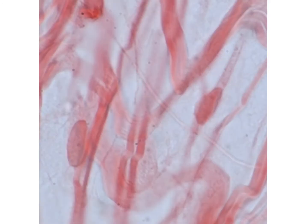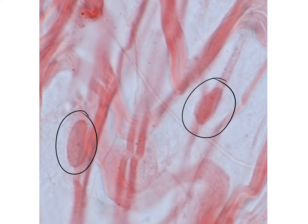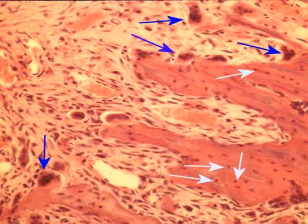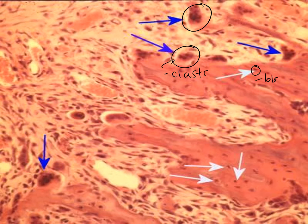A fibroblast has a somewhat star-shaped appearance, though what you typically see is its large nucleus. Fibroblasts are common in connective tissues because they make or grow fibers. Osteoclasts shown at the blue arrows are much larger cells; osteoblasts at the white arrows are smaller. The osteoclast's daily activity is to break down bone matrix, while the osteoblast's job is to build or grow new bone tissue.